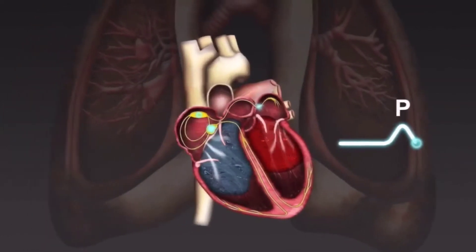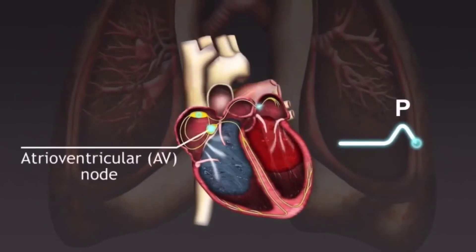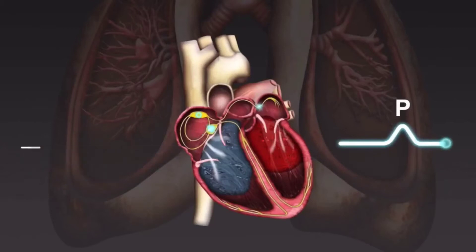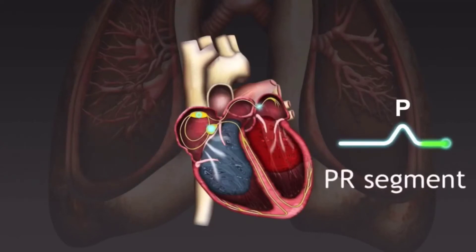The impulse then travels through the atrioventricular node, producing a flat section on the ECG known as the PR segment. The PR segment is flat because no current is flowing through the cardiac muscle cells.